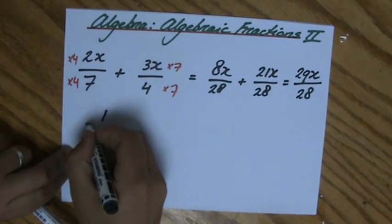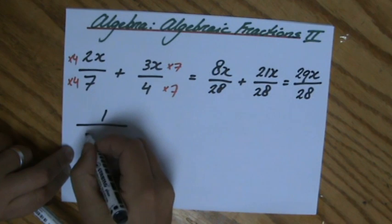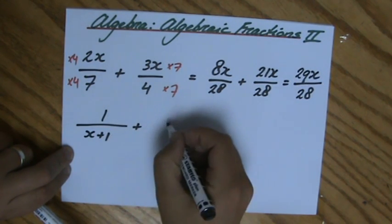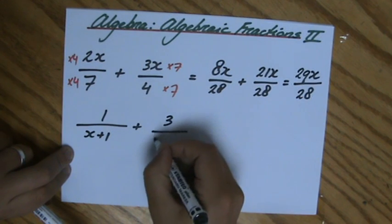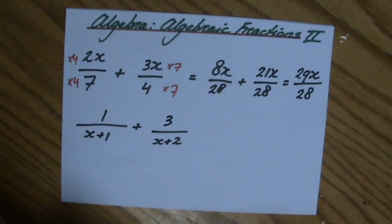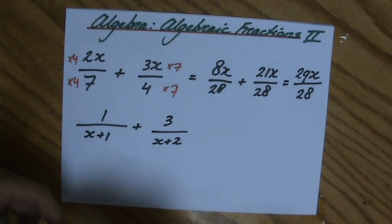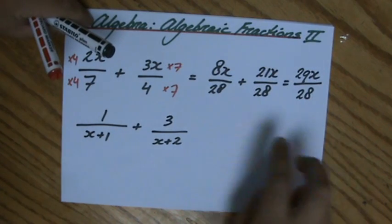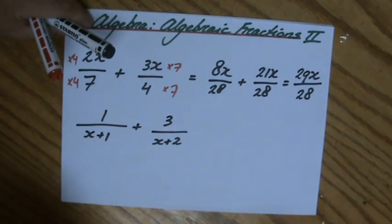But if we step it up one level, let's say we have 1/(x+1) + 3/(x+2). Now don't all of a sudden do something else. You should be asking yourself the same questions every time when working with fractions: is the denominator the same?